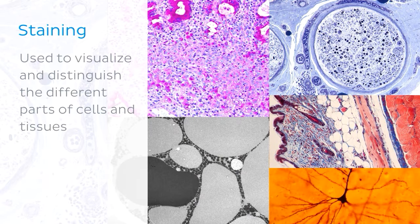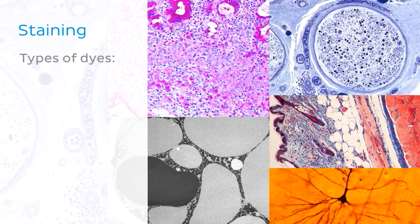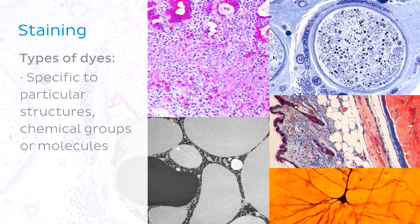We use staining methods to visualize and distinguish the different parts of cells and tissues, since cells and their structures are usually transparent or colorless. The types of dyes used to color cells and their components can either be specific to particular structures, chemical groups, or even molecules, and they can also be non-specific, in which case most of the cell is stained in the same way.